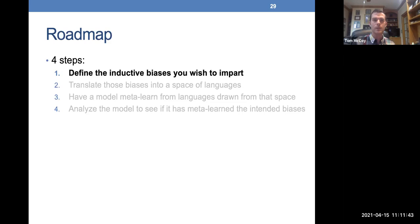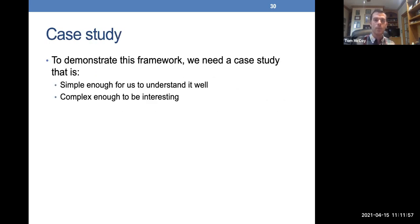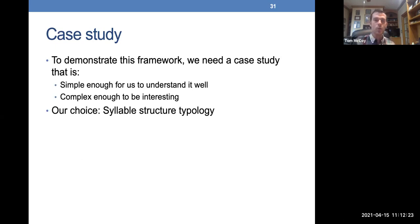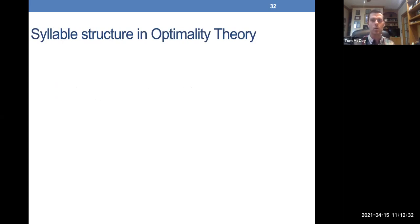Our framework has four steps. The first step is to define the inductive biases you wish to give your model. We wanted a case study simple enough to understand well, but complex enough to be non-trivial. We chose syllable structure typology from linguistics, adopting the analysis from optimality theory. Under this framework, every word has an underlying form such as K-T-A, and a surface form that is actually pronounced, such as K-T-A, with periods denoting syllable boundaries.